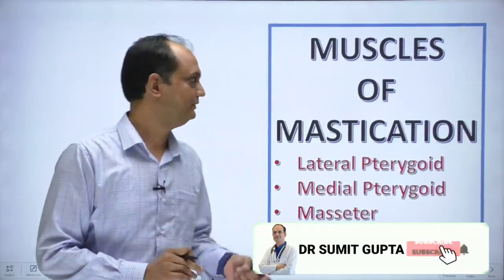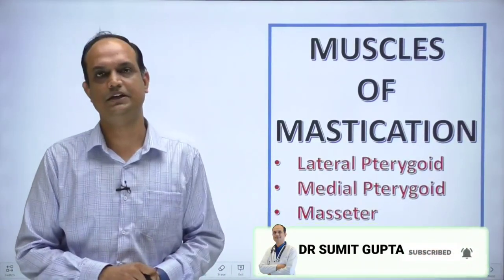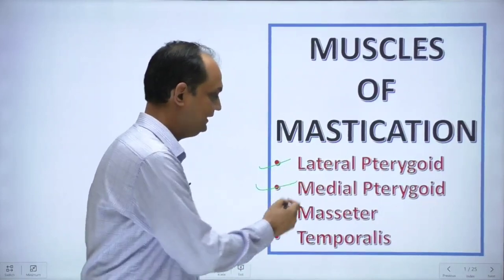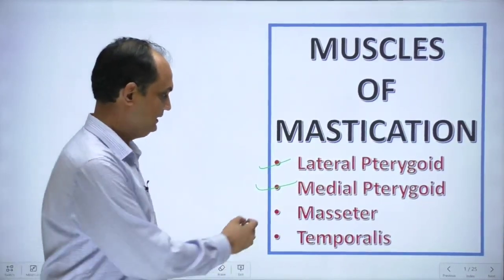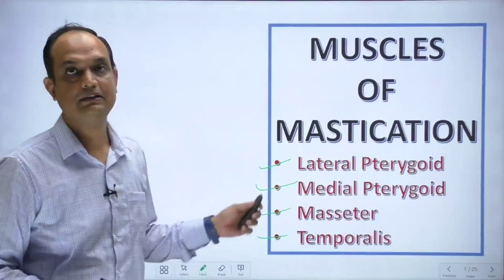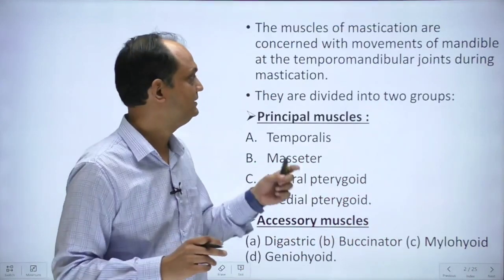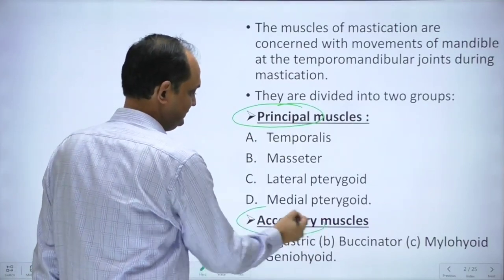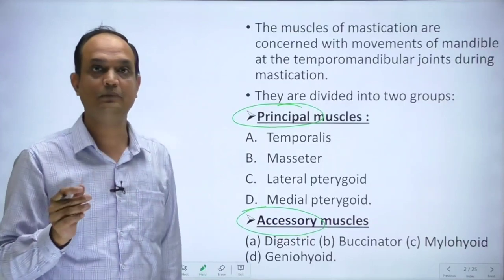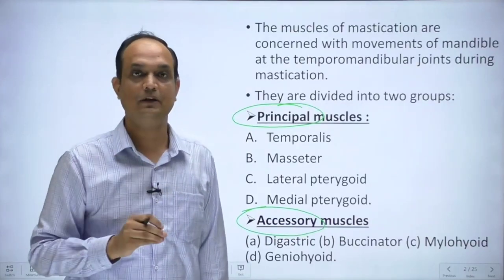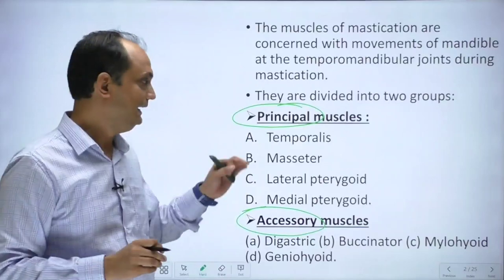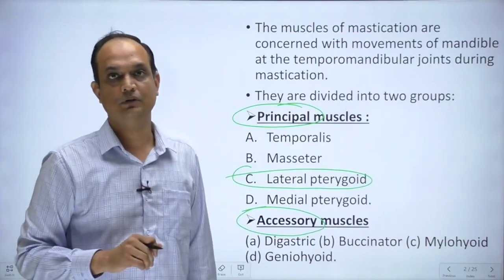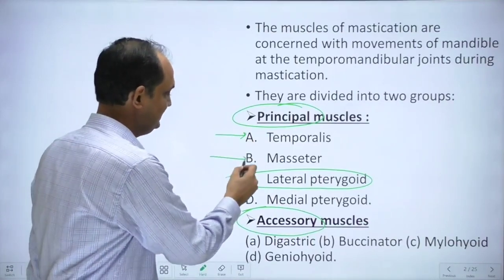Hello students, today we will discuss the muscles of mastication. There are four muscles of mastication: lateral pterygoid, medial pterygoid, masseter, and temporalis. These muscles are divided into two groups - principal muscles and accessory muscles. Accessory muscles are the suprahyoid muscles. We have already covered the lateral pterygoid in the last video. Today we will discuss temporalis, masseter, and medial pterygoid.